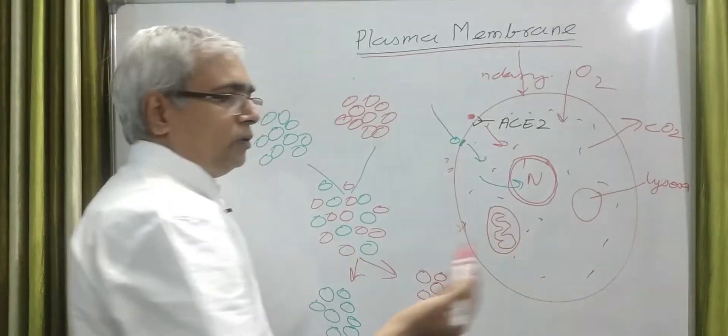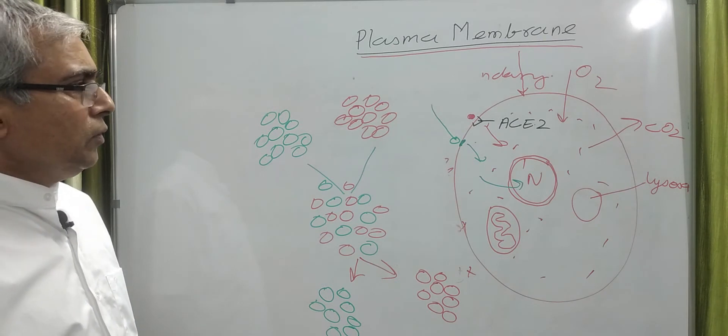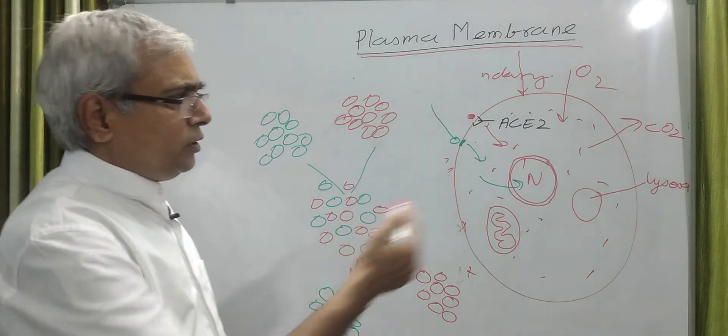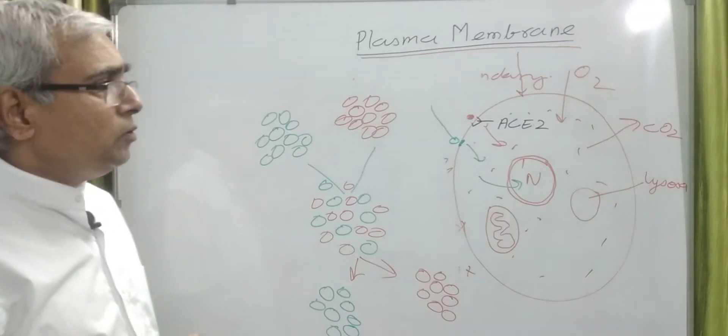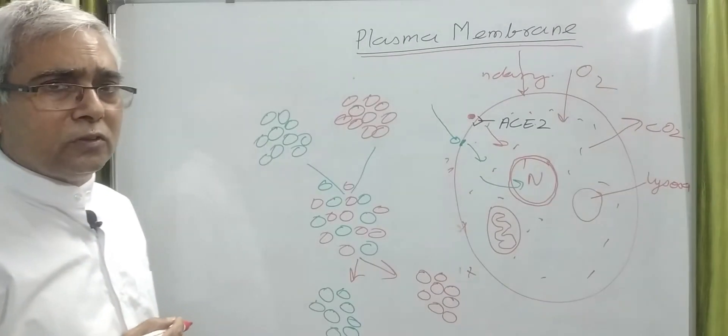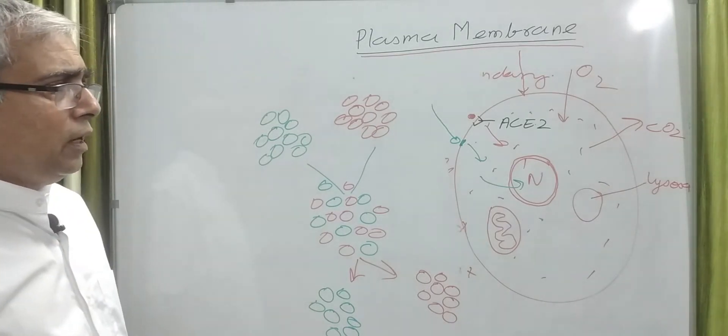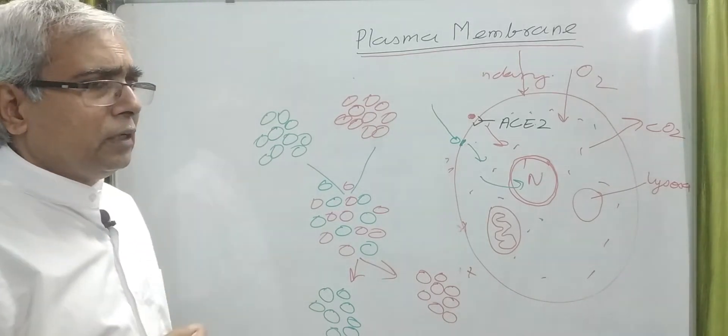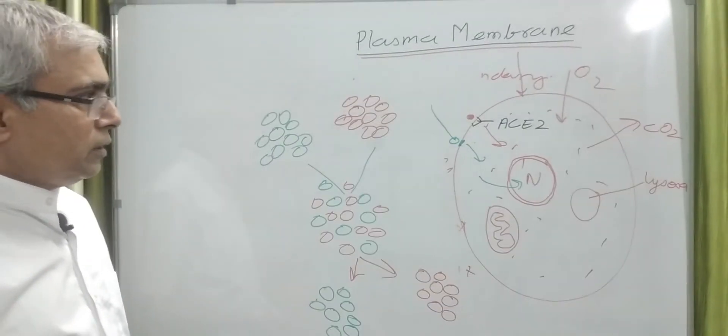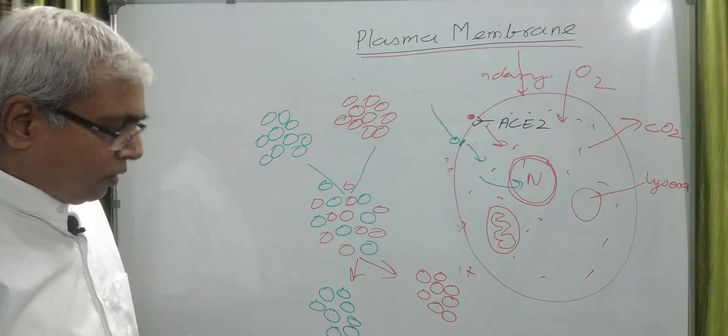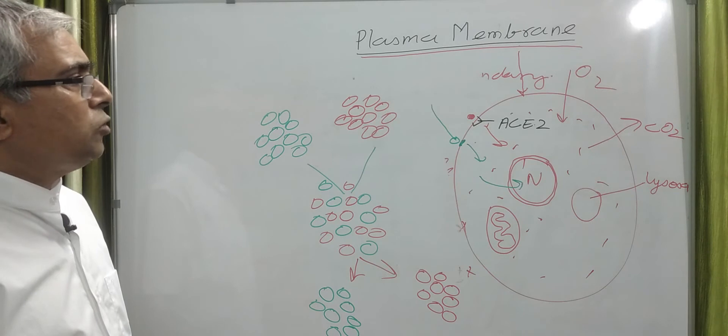Cell signaling, transport of substances - all these activities are ultimately regulated by or occur through the plasma membrane. So now you can understand the importance of plasma membrane in the cell.